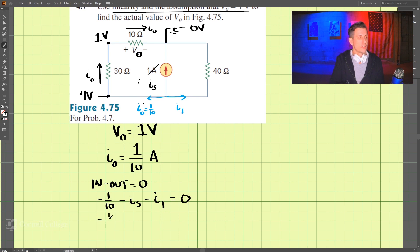So let's rewrite this: 1 over 10 minus IS minus I1. Because we know that this is 4 volts, I1 is equal to 4 minus 0 divided by the resistance of 40.